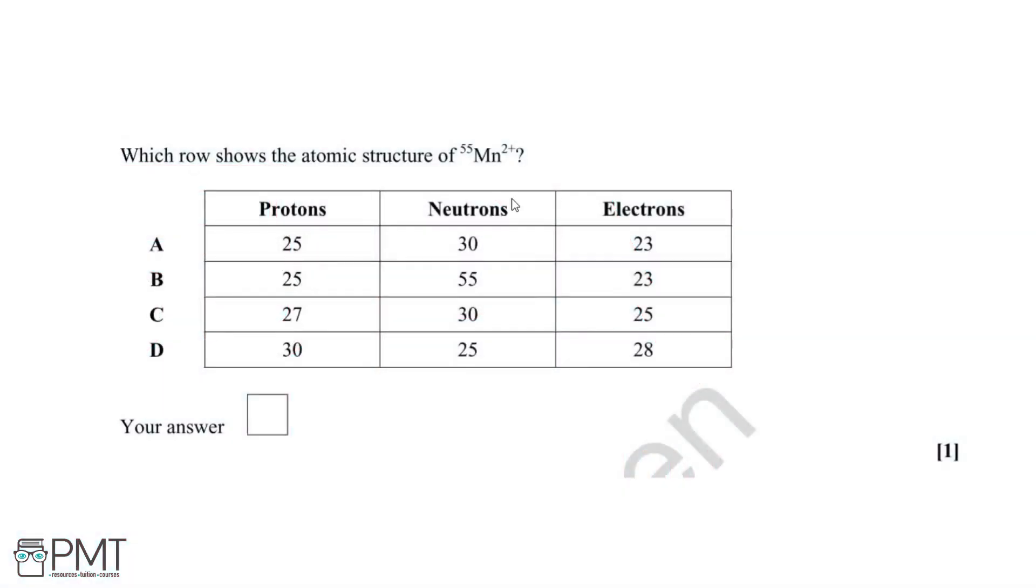Which row in the table below shows the atomic structure of this ion here? So we've got a manganese 2 plus ion with an atomic mass of 55.